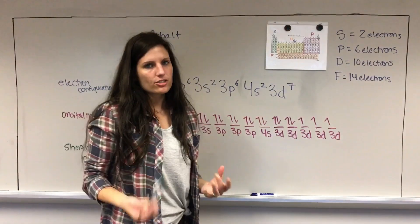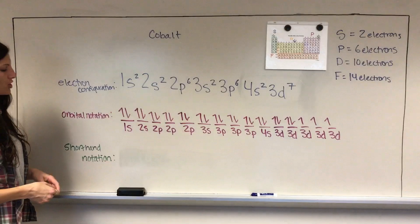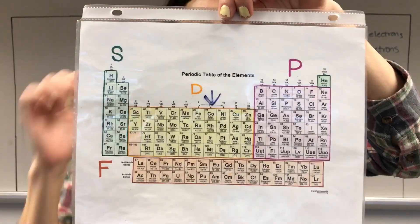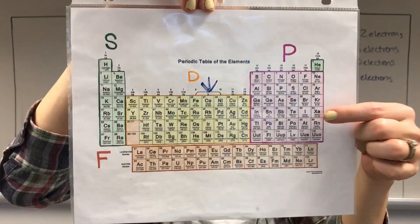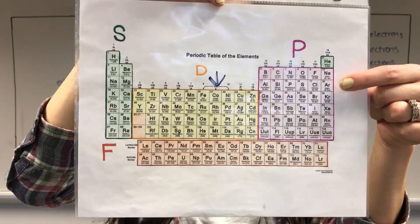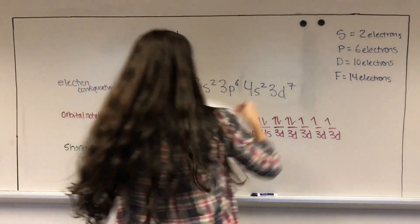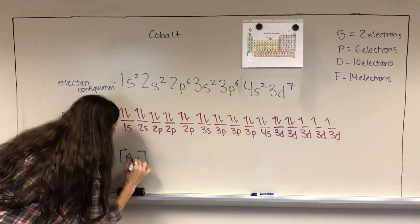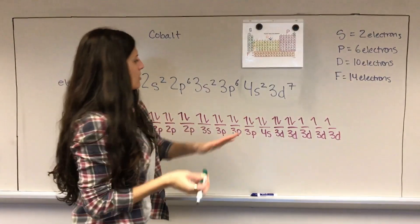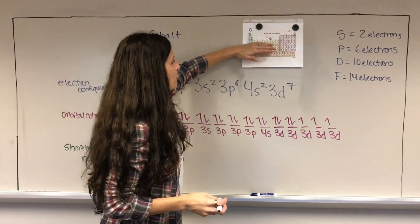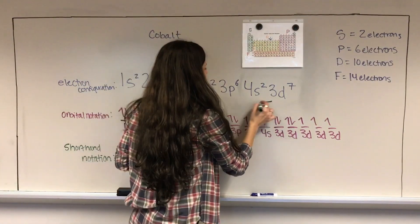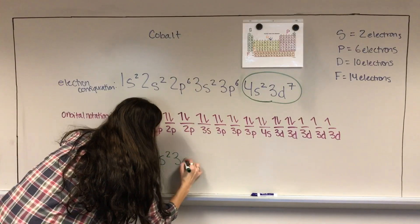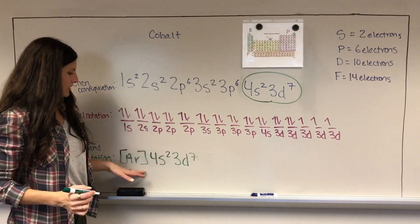Last but not least, you're going to do your shorthand notation. Go back to the periodic table and look at the row that your element is in - cobalt is right here. Go up to the row before that and take the last element from that row, which in this case is argon. Put that element in brackets to start your shorthand notation. From there, take everything from the electron configuration that's in the same row as your element - for cobalt that's the 4s² and the 3d⁷ - and add that on to the end of your bracketed element. That's your shorthand notation.